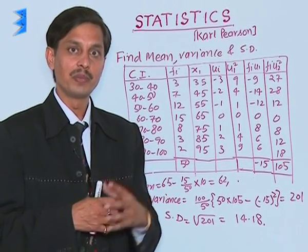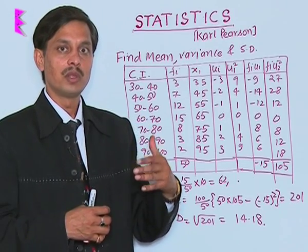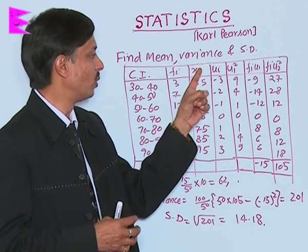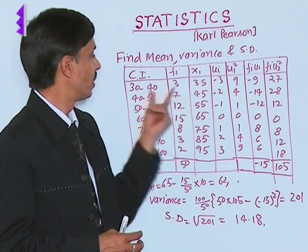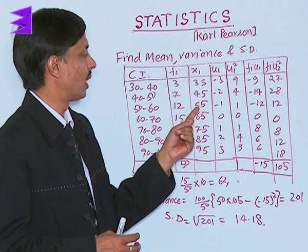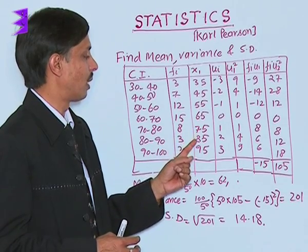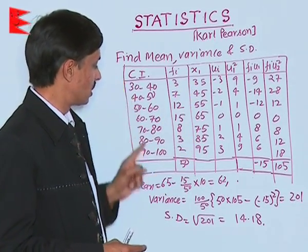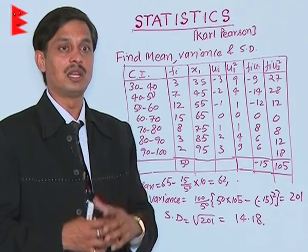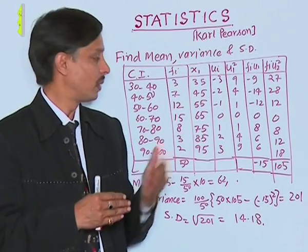To obtain the mean, we calculate the midpoints xᵢ. For 30-40, the midpoint is 35, then 45, 55, 65, 75, 85, and 95. These are class marks using (lower limit + upper limit)/2.